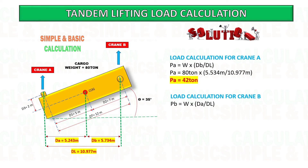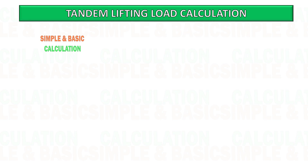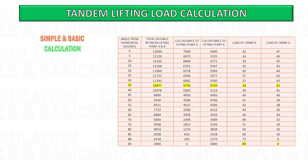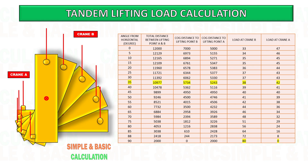Due to the 35-degree tilt of the cargo, the weight is shifting towards crane B, and crane A is getting lesser load. This is the overall loading in each crane from zero degrees to 90 degrees of tilting. At 90 degrees, crane B is taking all the weight of the cargo and crane A has no load.